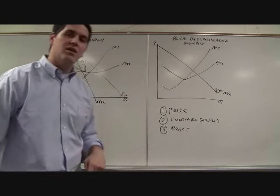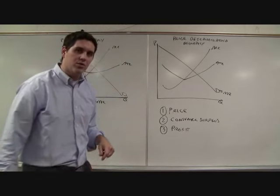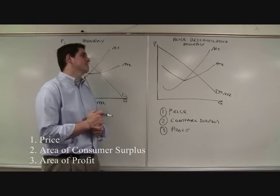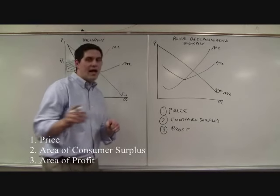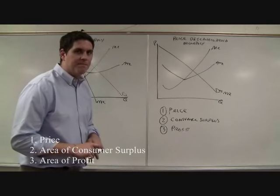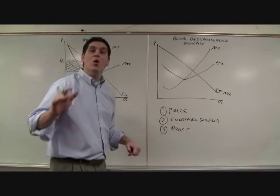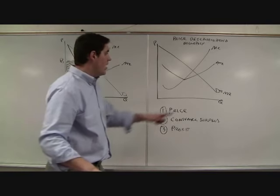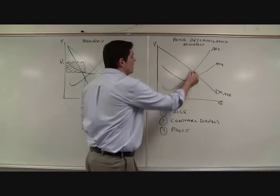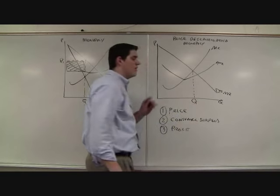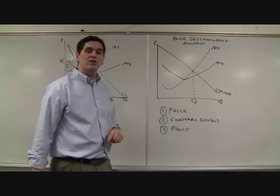Price, consumer surplus, profit. Good luck. Pause the video. We'll see how you do. How'd you do? You think you got it? Alright. Well before we start doing these things we need a quantity. And that's an easy one. MR equals MC. Every firm produces the same quantity to maximize profit. There's your quantity. Now let's do the hard stuff.